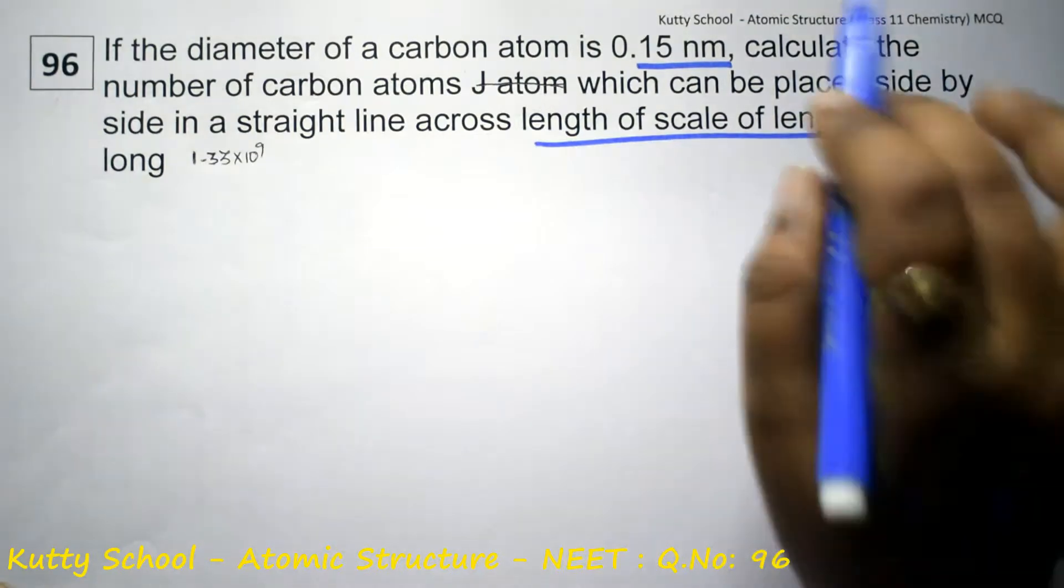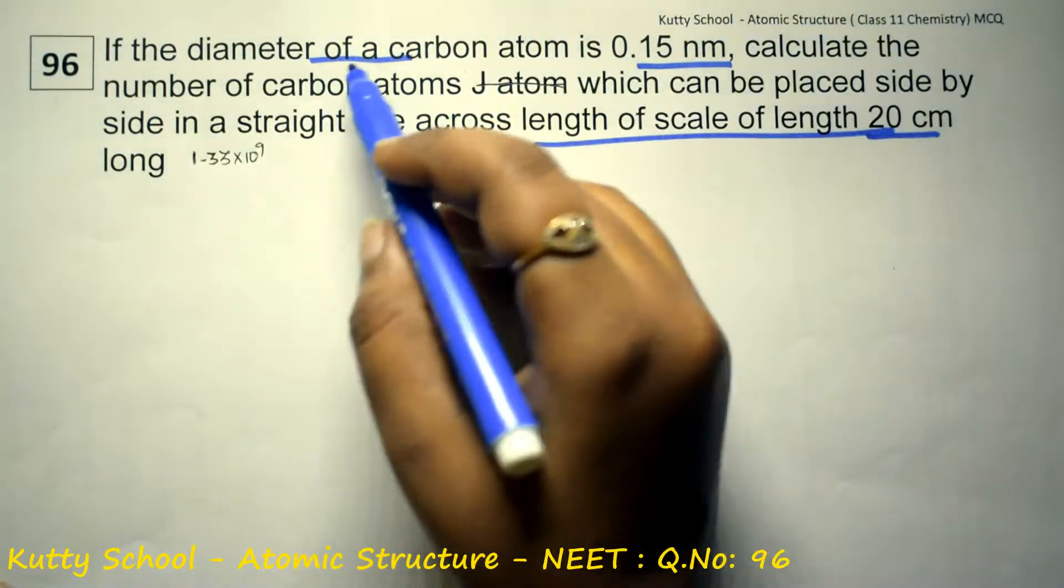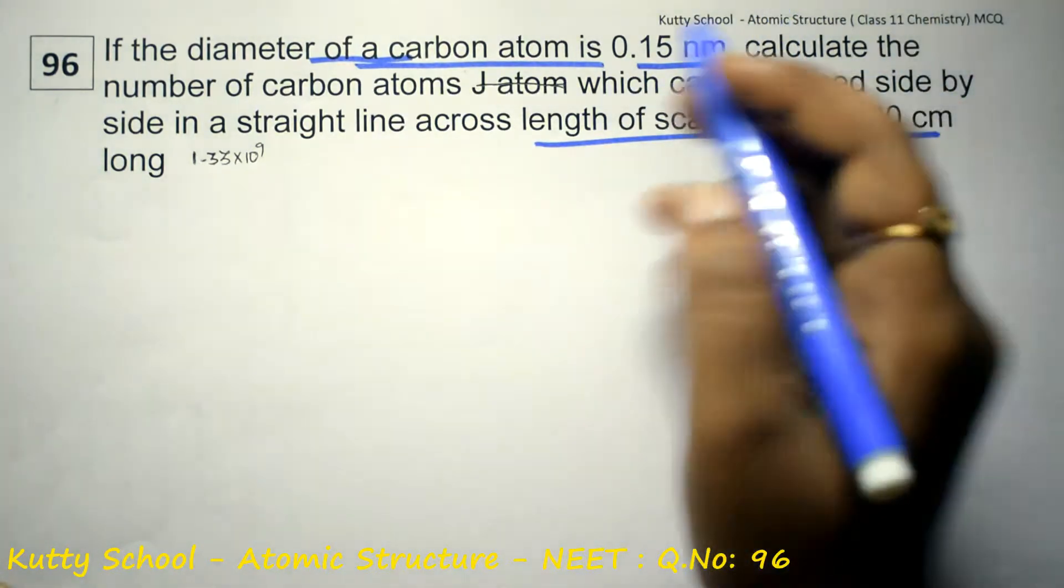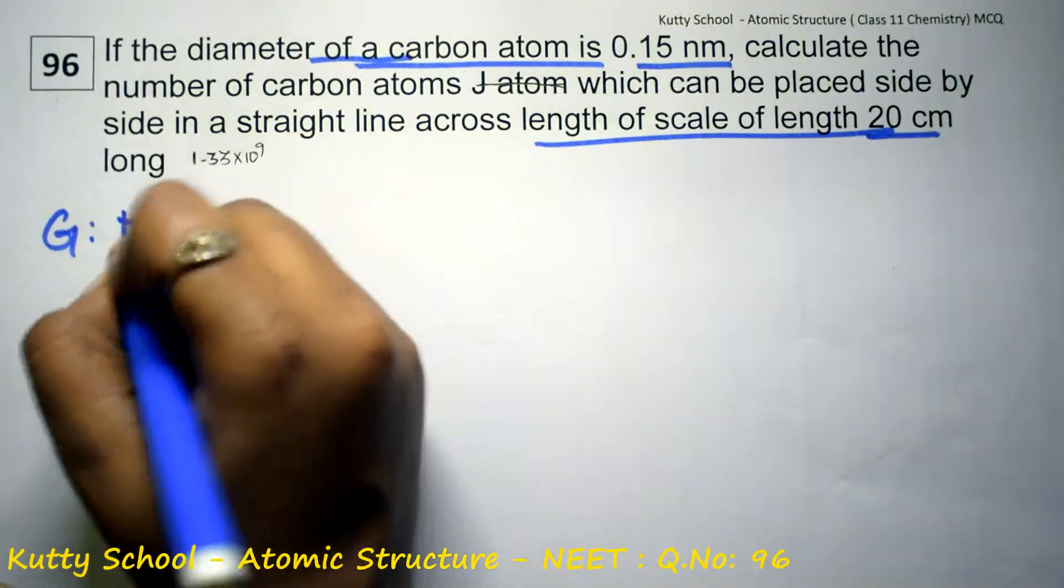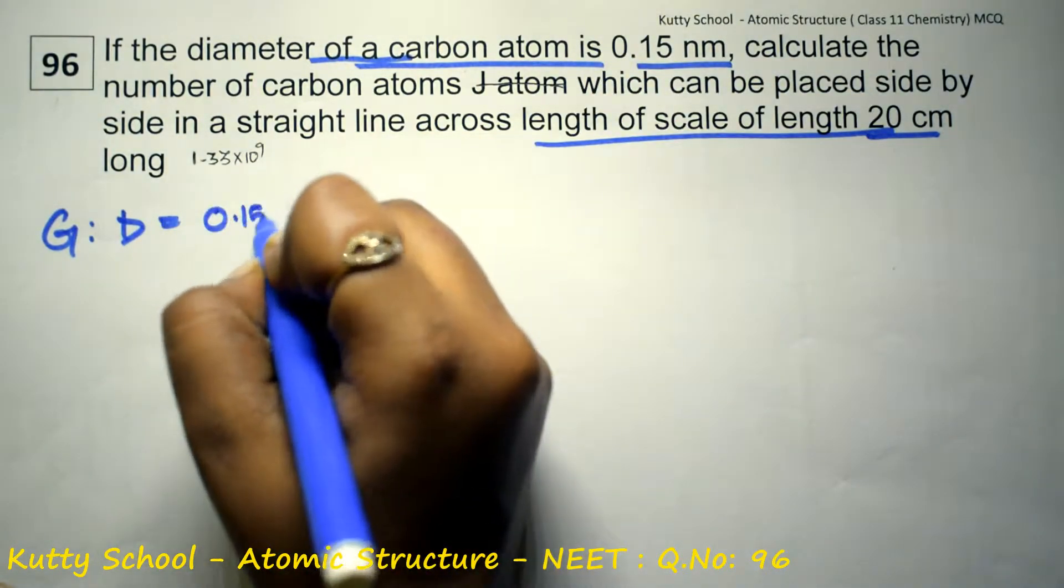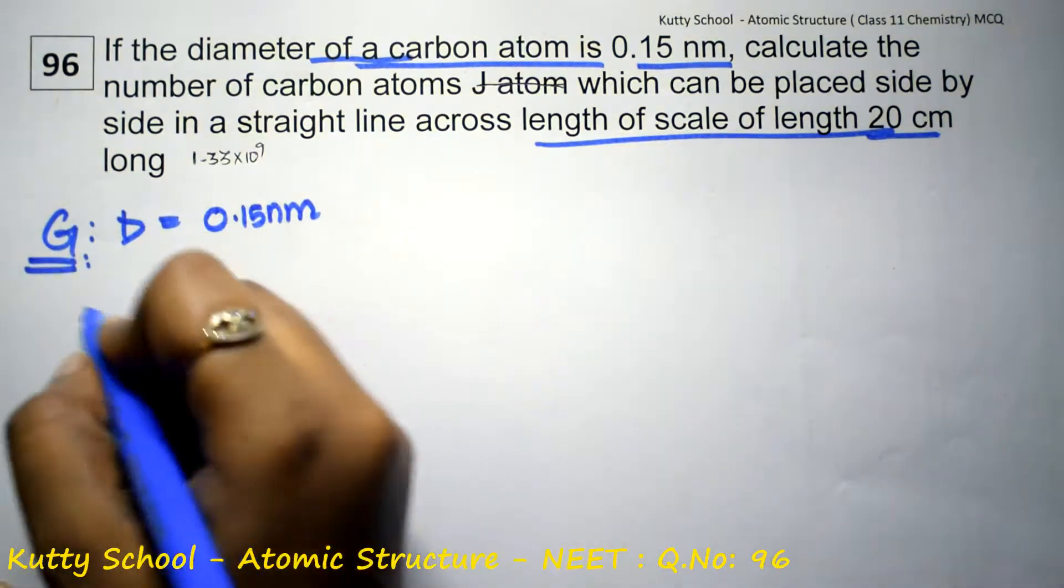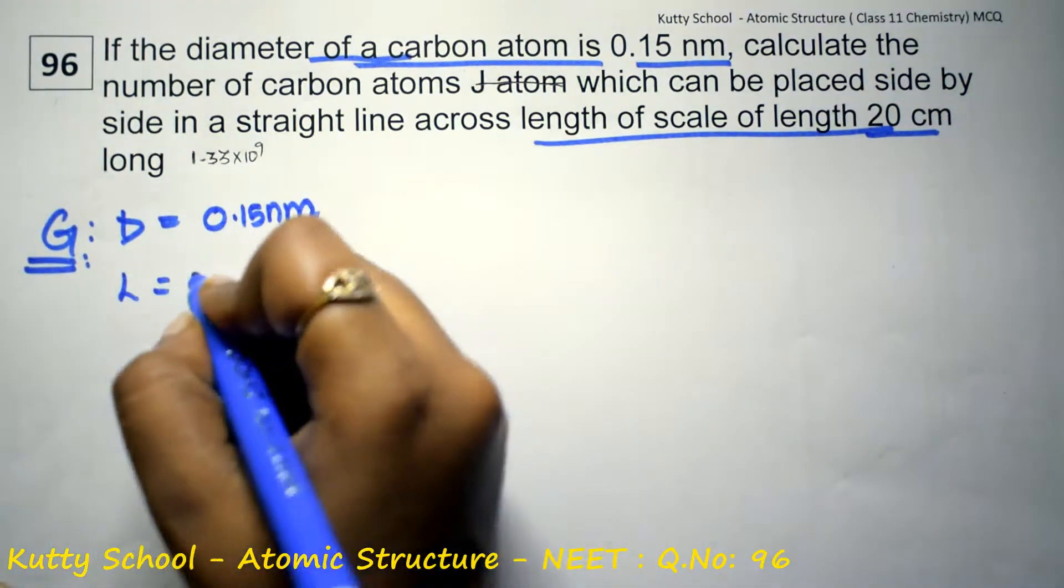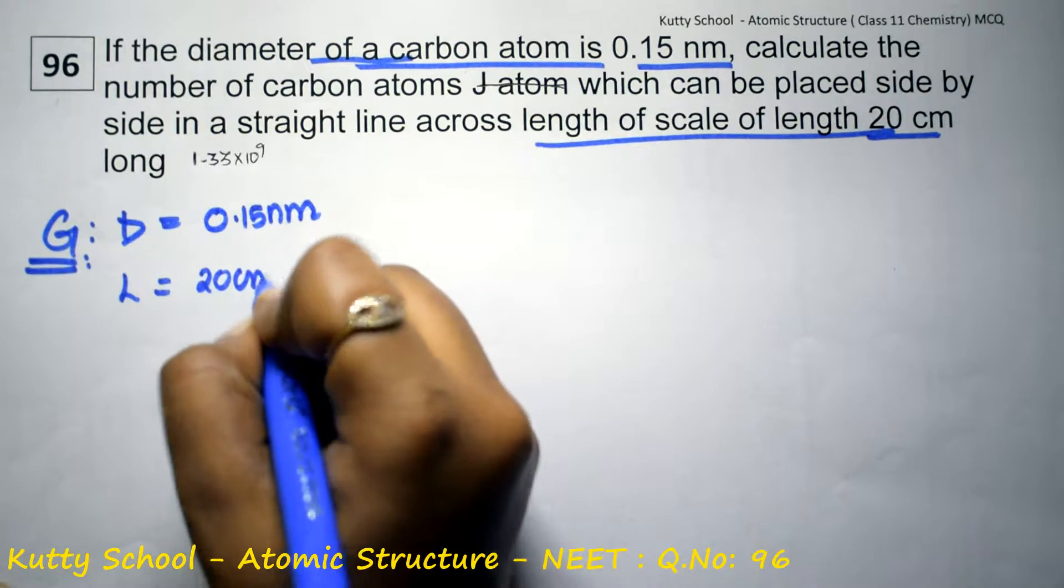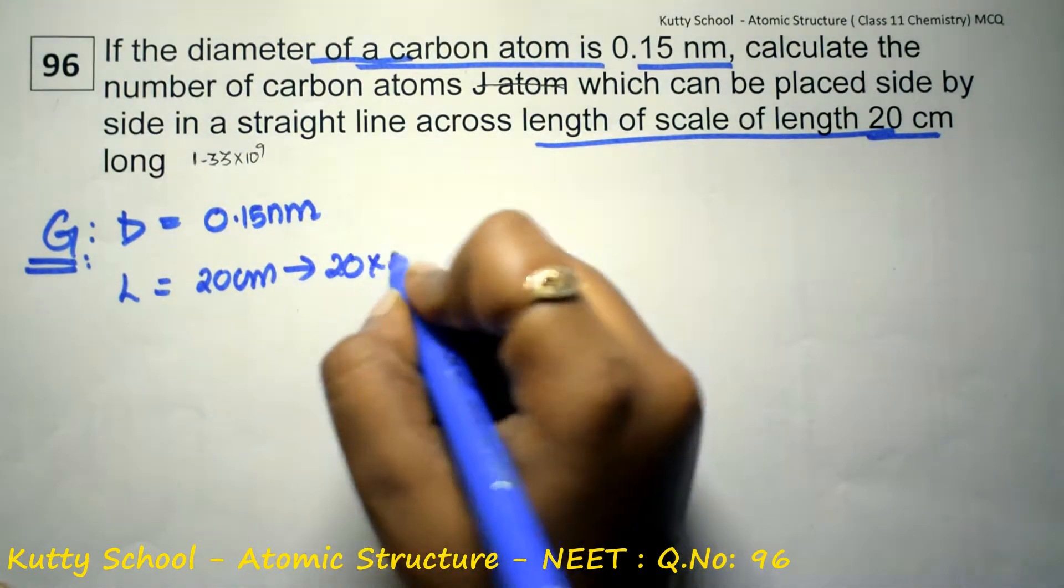So length of the scale is equal to diameter and number of atoms. Length is equal to 20 centimeter, so converting to meter: 20 by 100, so into 10 power minus 2.